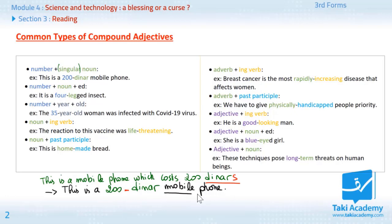Here we are describing the mobile phone. We say it's a 200 dinar mobile phone. And there is no s. It's a singular noun. Here I explain. This is the number. This is the hyphen. And this is the singular noun. This is the first combination here.